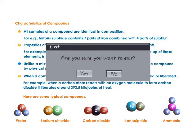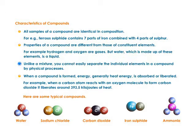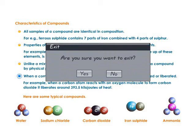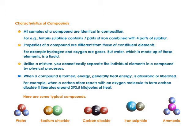Unlike a mixture, you cannot easily separate the individual elements in a compound by physical processes. When a compound is formed, energy — generally heat energy — is absorbed or liberated. For example, when a carbon atom reacts with an oxygen molecule to form carbon dioxide, it liberates around 393.5 kilojoules of heat.